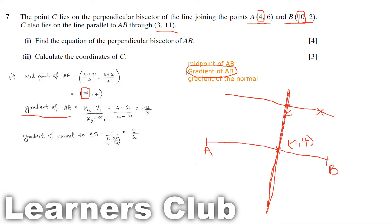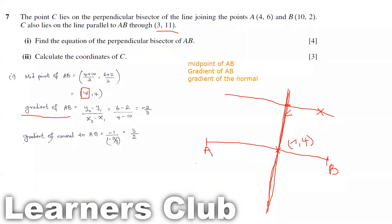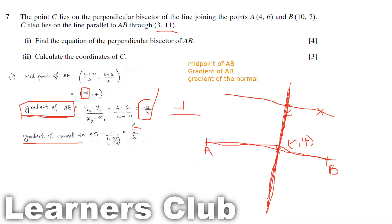Finding the gradient of AB using (y2 minus y1) over (x2 minus x1): taking 6 minus 2 over 4 minus 10, we get minus 2 by 3. To find the gradient of the normal, we take minus 1 over the gradient of the line. So minus 1 over minus 2 by 3 gives a gradient of the normal as 3 by 2.